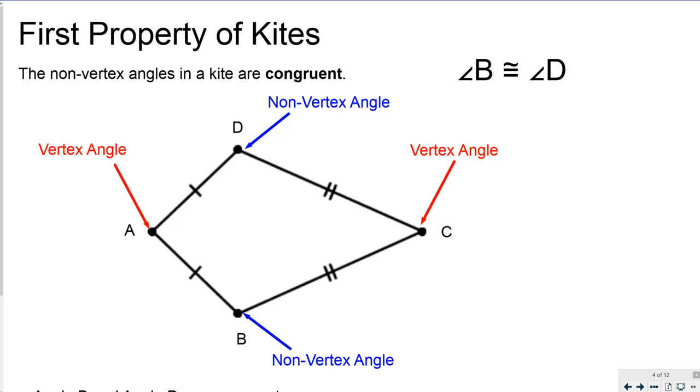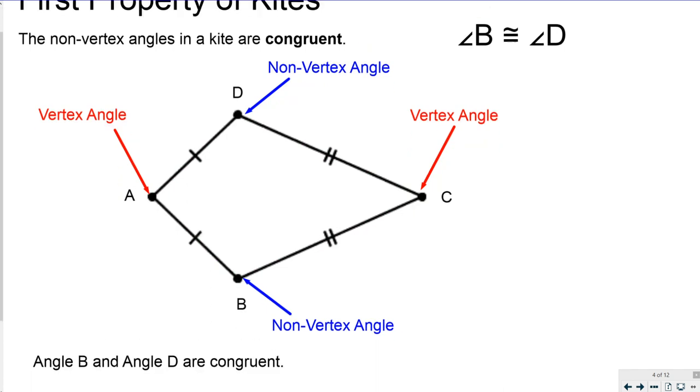The two non-vertex angles, the ones that are across from each other here labeled B and D, are congruent. That is the first property of kites. So the non-vertex angles in a kite are congruent so you can say that angle B and angle D are congruent.